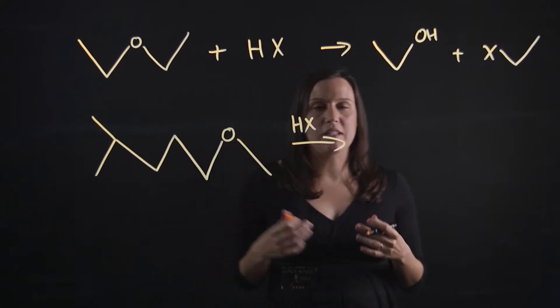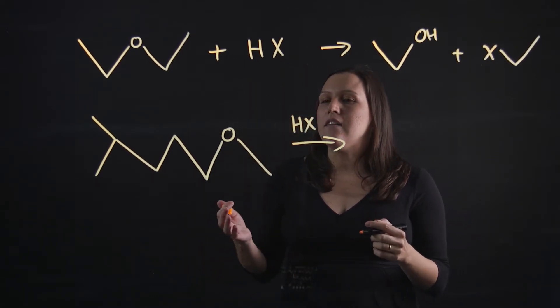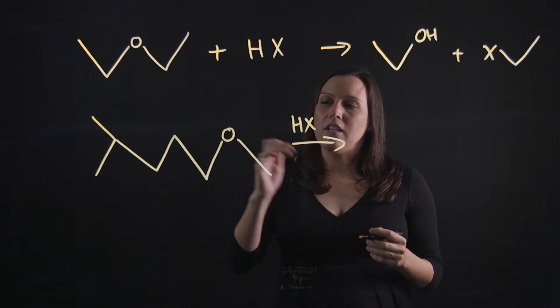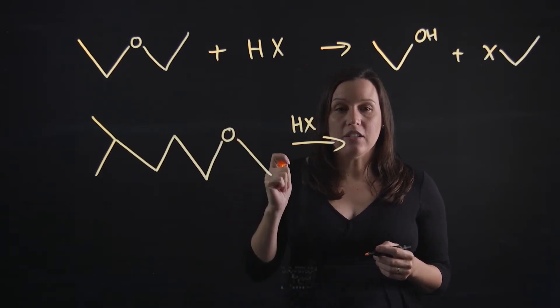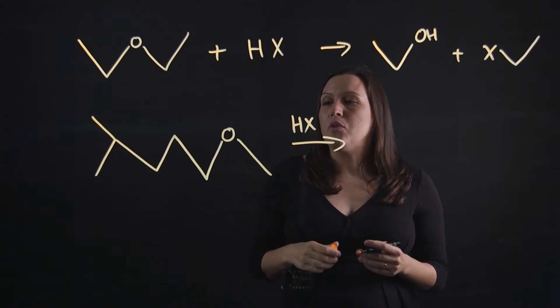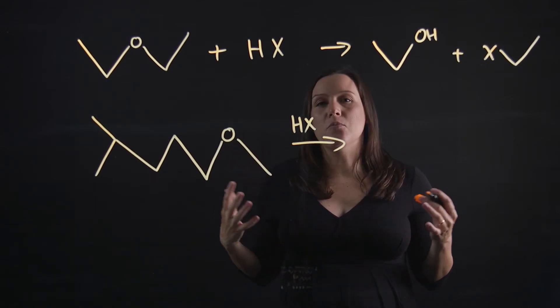write it above the arrow this time because it means the same thing. I need to work out which side will get that OH and which side will get the halogen. The side that will get the OH will be the larger bulkier side.